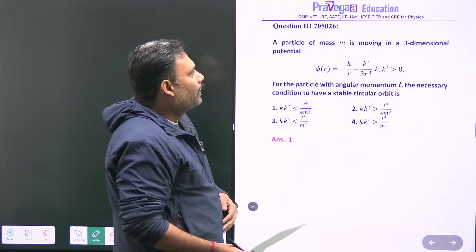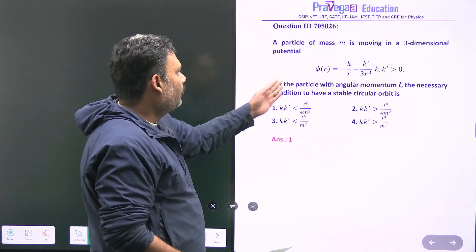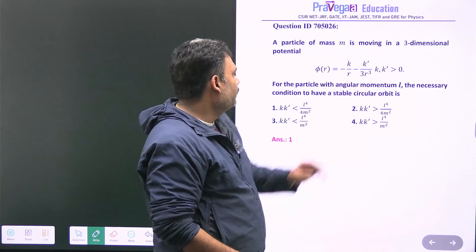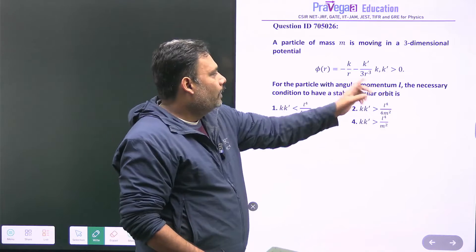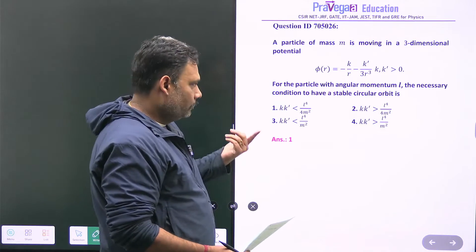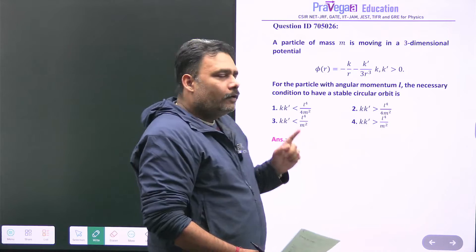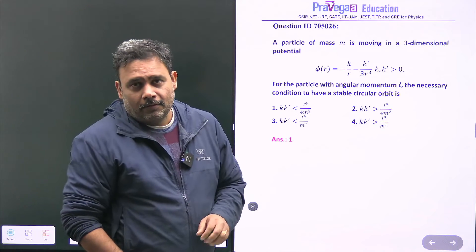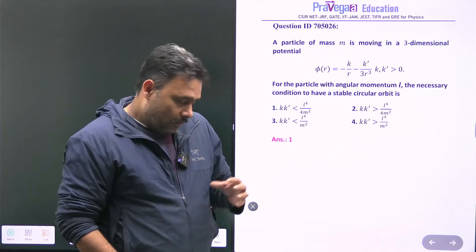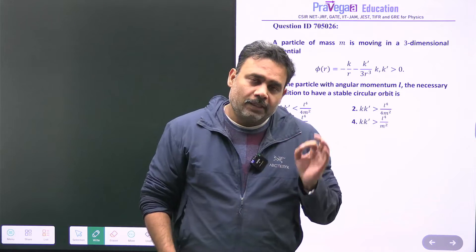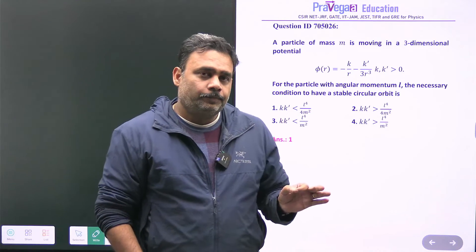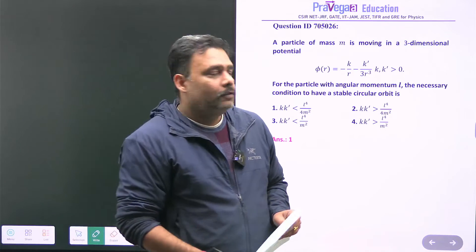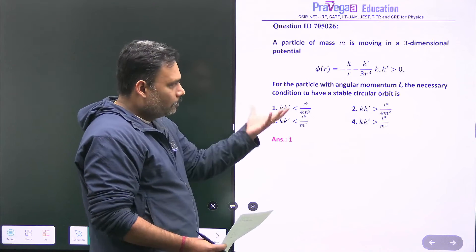There is a particle of mass m moving in a three-dimensional potential φ(r) = -k/r - k'/3r³, where k and k' are given constants. The angular momentum of the particle is L, which is conserved because this is a central force problem. We have to find the necessary condition to have a stable circular orbit.